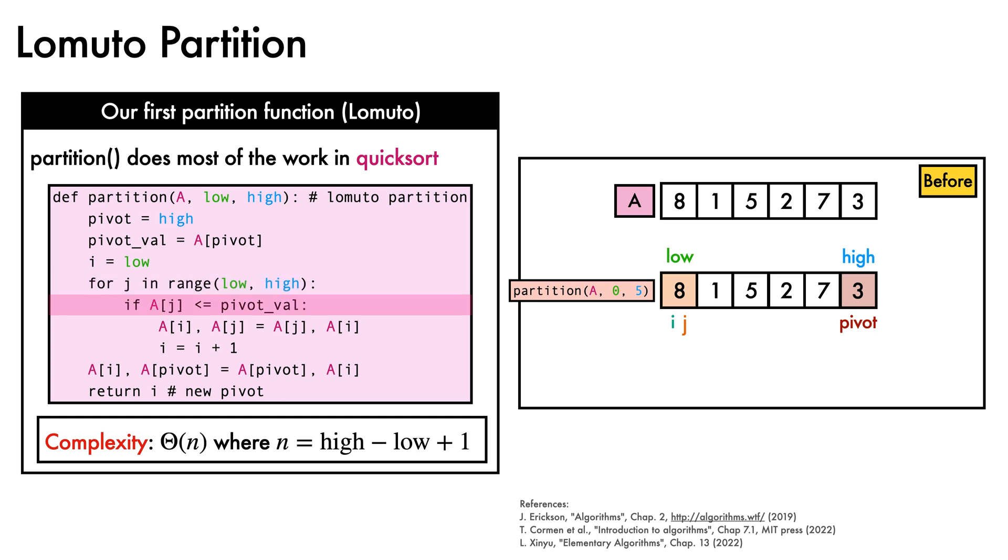We check if aj is less than the pivot value, and find that it isn't, since 8 is greater than 3. So we go to the next value of j. We again check if aj is less than the pivot value, and find that it is, since 1 is less than 3. So we swap ai and aj, increment i, and go to the next value of j. To help us keep track of what's going on, let's colour the box to the left of i in teal.